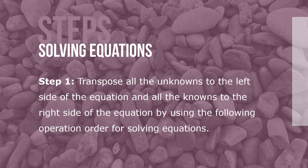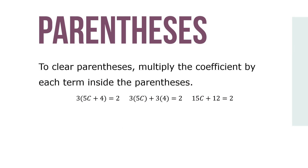Here are the steps for solving equations and proving the solution. Step one: transpose all the unknowns to the left side and all the knowns to the right side using the following operation order. Parentheses, if any, must be cleared before any other operations are performed. To clear parentheses, multiply the coefficient by each term inside the parentheses. So if our equation is 3(5c + 4) = 2, we convert it to 15c plus 12 equals 2.